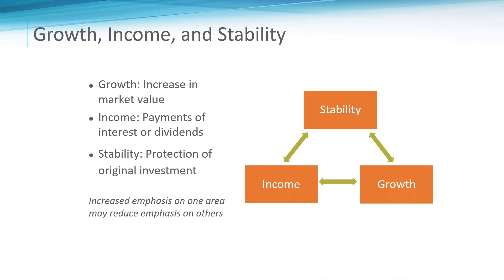Some key investment terms: growth, income, and stability. Growth refers to anything that increases in market value — stocks, mutual funds, ETFs, real estate. Income is payments of interest or dividends — annuities, bond interest, or dividend-paying stocks. Stability is preservation of principal or original investment — think CDs, money markets, and fixed annuities. It's important to have a balance of these three areas based on your personal risk tolerance.